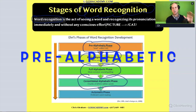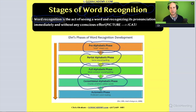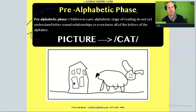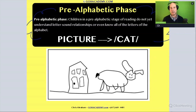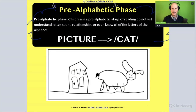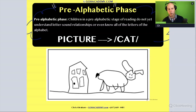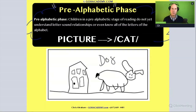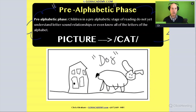Let's start with the pre-alphabetic phase of word recognition. At this stage, before the alphabet, the student is not recognizing words in a text — it's literally in the name. They are before the alphabet, accessing text through pictures, diagrams, and illustrations. They would not be accessing the words on a page because they don't have the alphabetical principle yet to decode words.